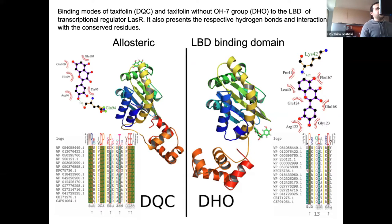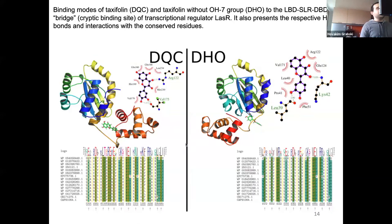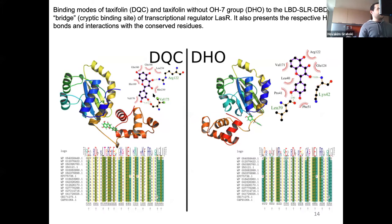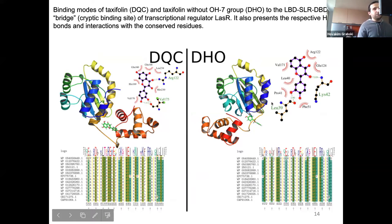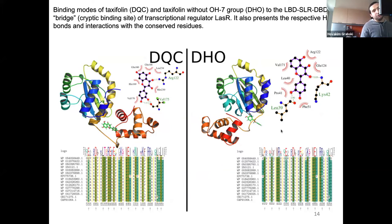For the second binding site, which corresponds to the DNA binding region, taxifolin interacts with many residues including certain key residues. Removing the OH group decreases the number of residues that participate in the interaction.